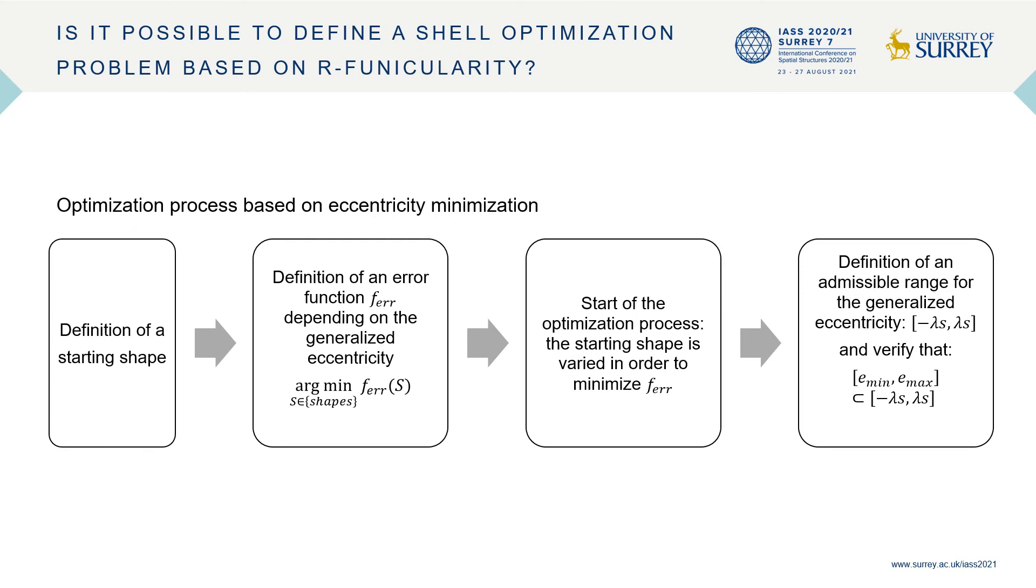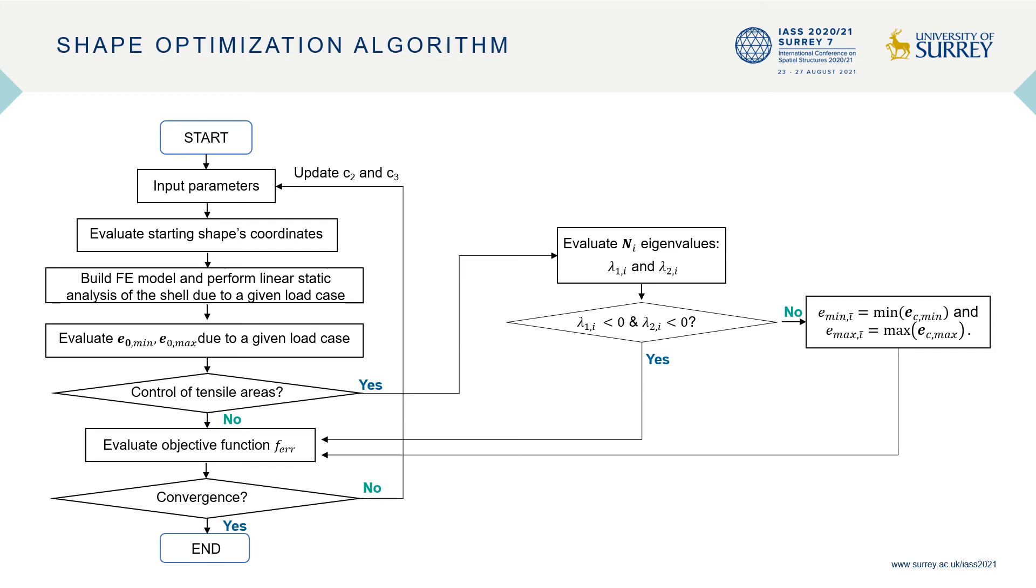The optimization process based on eccentricity minimization can be summarized in four main steps that comprise the definition of a starting shape and an error function depending on the generalized eccentricity. In the third step, the starting shape is varied in order to minimize the objective function. Then it is necessary to define an admissible range for the generalized eccentricity and to verify that the minimum and maximum eccentricity belongs to the range at each point of the surface.